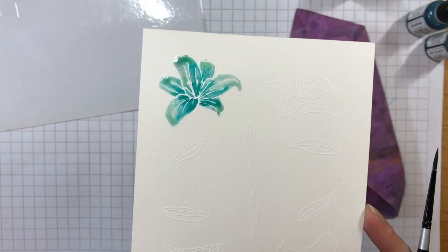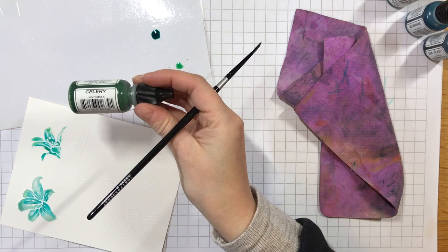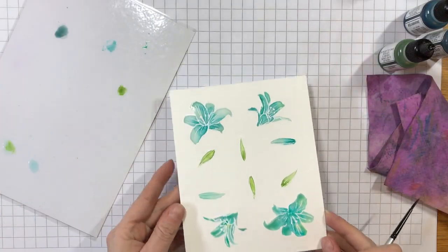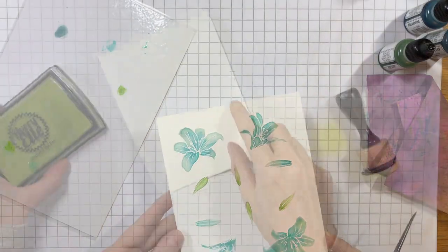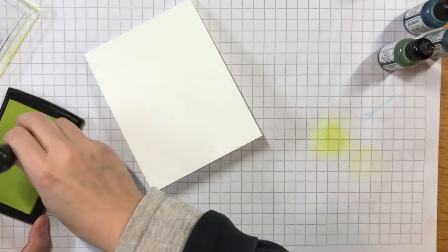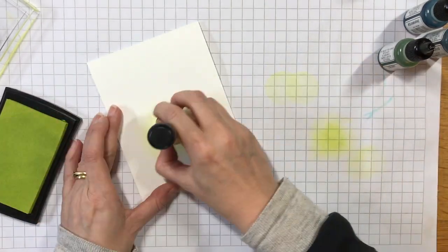I continue coloring all the images, building up the color until I'm happy with them, and then I can set them aside to either dry naturally or I can heat set them for a quicker result. While that's happening, you can get on with creating the rest of the card.